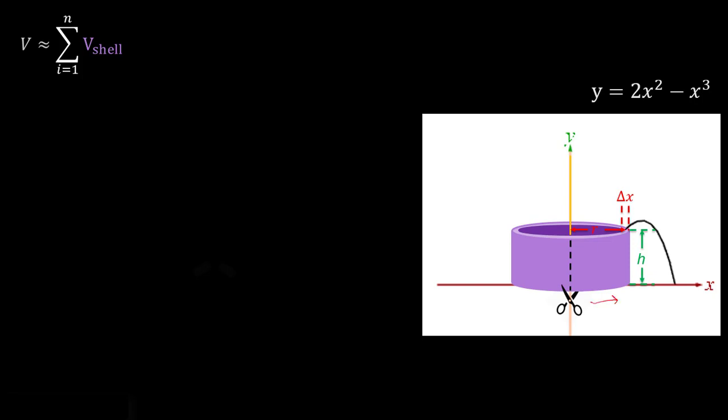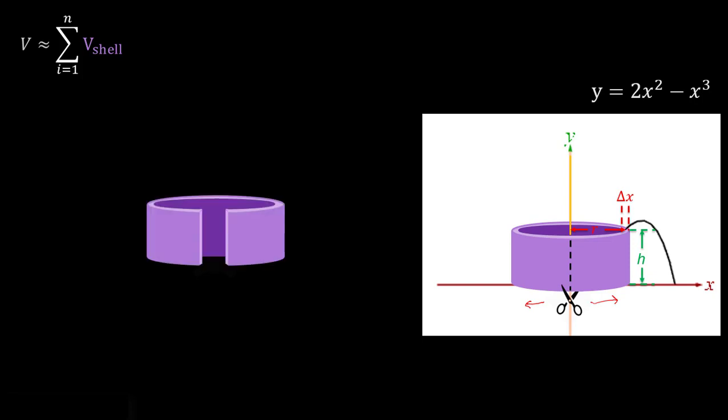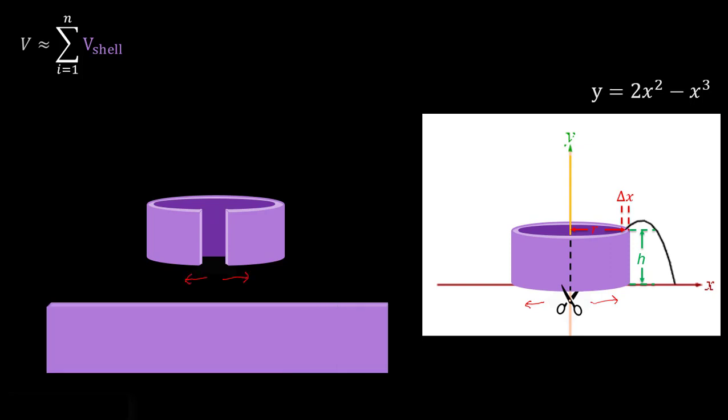So imagine if we did that and then we kind of peeled back our shell. Kind of open it up this way and this way. We end up with something like this where we're peeling it back. And if we go ahead and just peel that back further and just sort of roll this thing out, we get something that looks like this where we've sort of rolled it all the way out and flattened it. Now at this point this becomes a little bit easier to take the volume of.